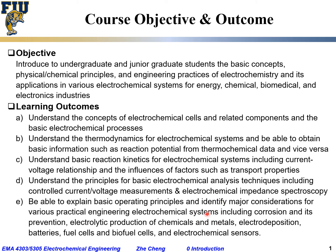Finally, we want students to be able to explain the basic operating principles and identify major considerations for various practical engineering electrochemical systems, including corrosion and its prevention, electrolytic production of chemicals and metals, electrodeposition and electroplating, batteries, fuel cells, biofuel cells, and electrochemical sensors. For all these different systems, they share similar underlying electrochemical principles, and we want you to understand those principles and identify the major considerations when you encounter them.